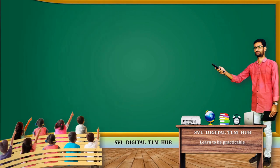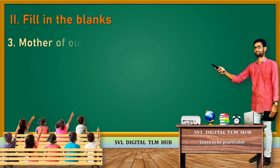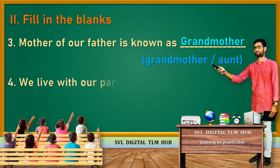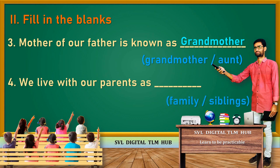Next one. Third one: Mother of Our Father is known as — options are Grandmother or Aunt. Answer is Grandmother. Mother of Our Father is known as Grandmother. Fourth one: We live with our parents as — options are Family or Siblings. Answer is Family. We live with our parents as a family.